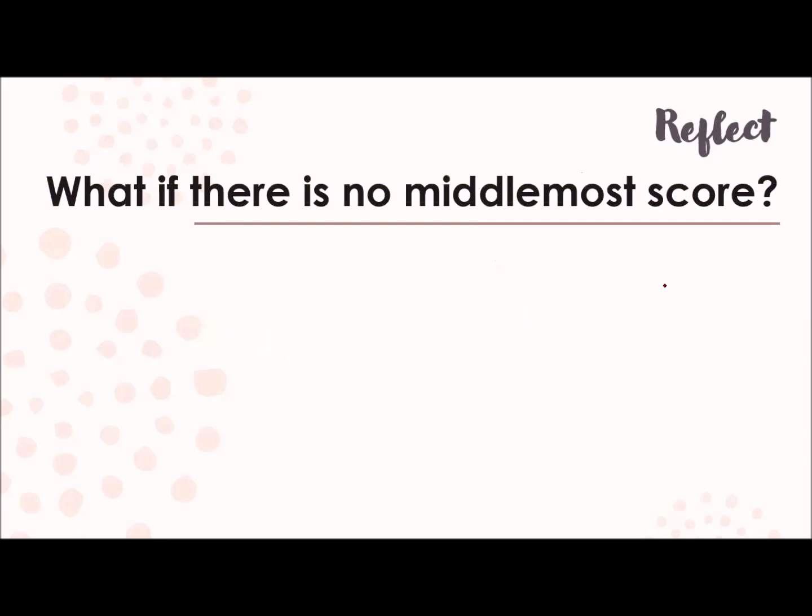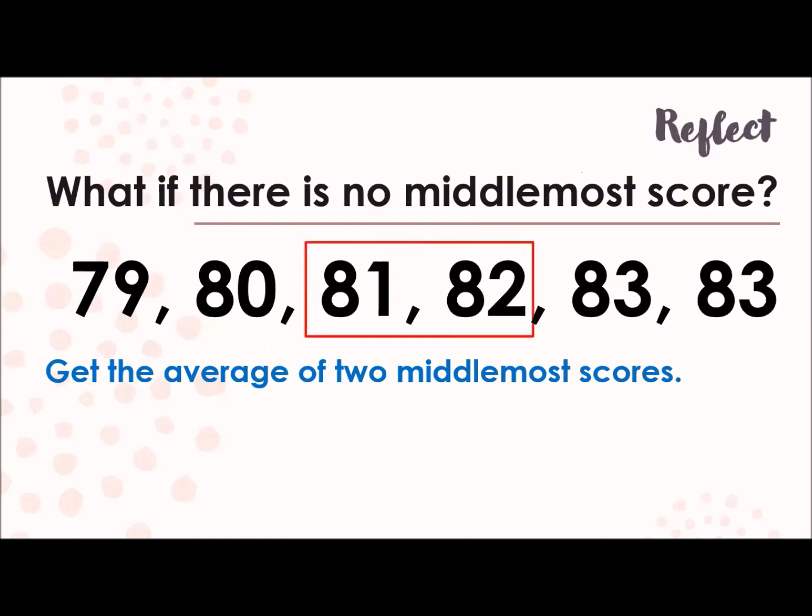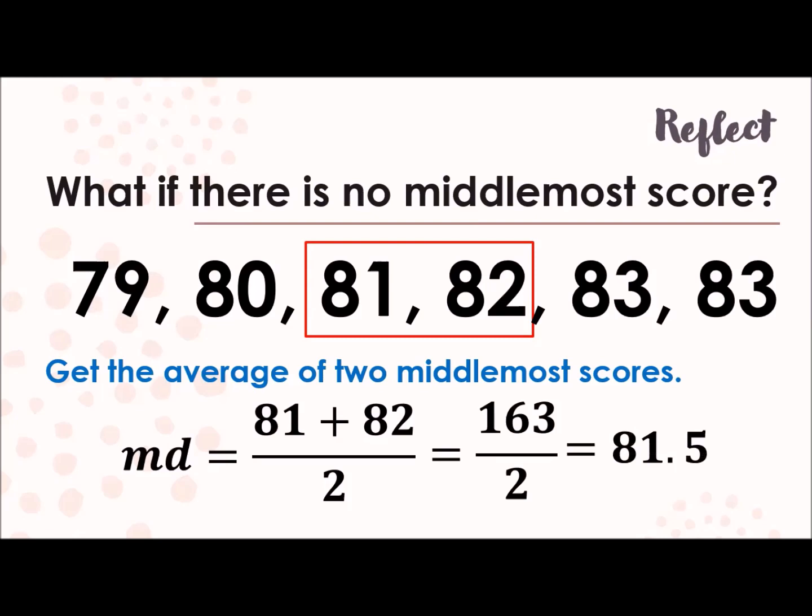I want you to reflect, what if there is no middlemost score? What if there's no middle? So let's have this data. I've added another score. So with that, we need to get the average of the two middlemost scores. The two in the middle, which are 81 and 82, you add them up, then divide by 2. To get the median, which is 81 plus 82 is 163, divided by 2, because only two scores are involved, that is 81.5.